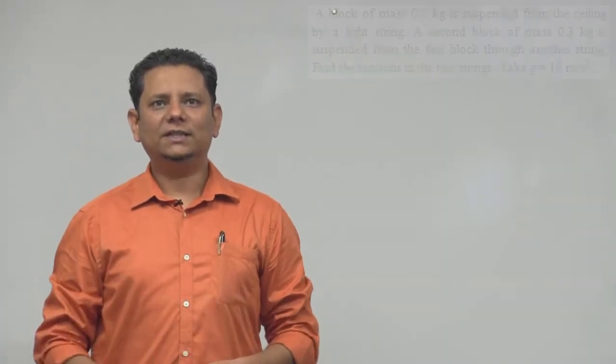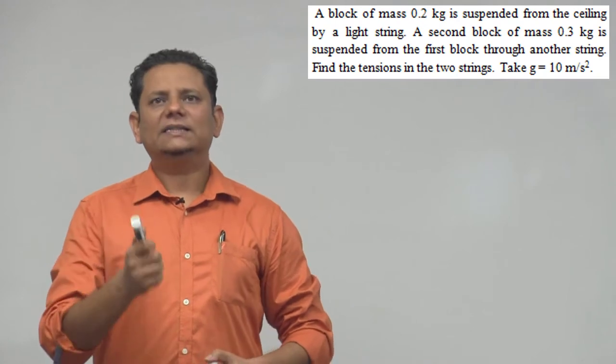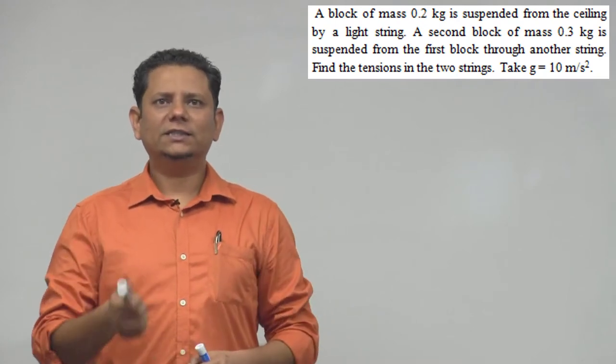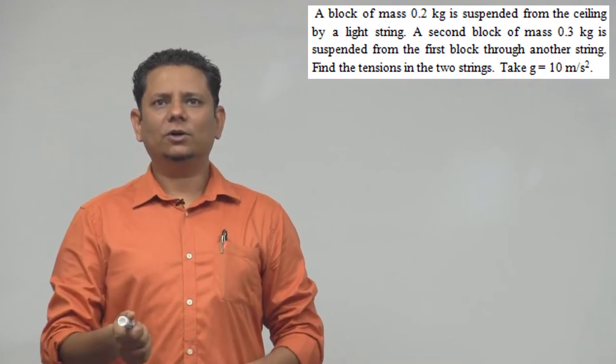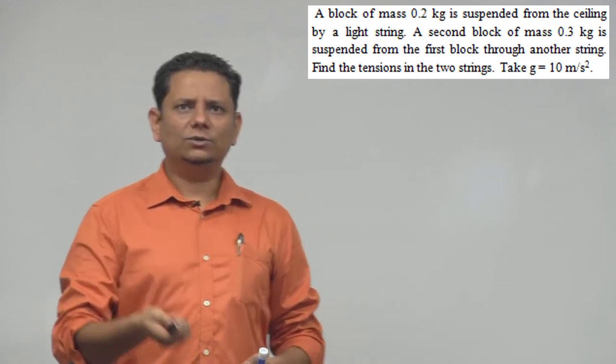Next question. The question says a block of mass 0.2 kg is suspended from the ceiling by a light string. The second block of mass 0.3 kg is suspended from the first block through another string. Find tension in the two strings.